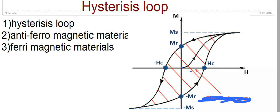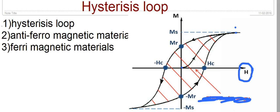If we increase the external magnetic field, the magnetization increases and it reaches some saturation value. After reaching the saturation value, if we remove the external magnetic field, the magnetization of the material is not lost — it remains because we are keeping the temperature constant. That remaining magnetization is called residual magnetization.